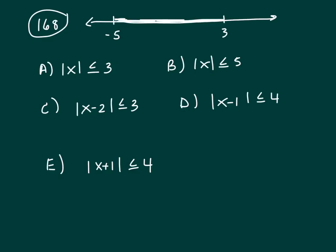In this problem, we're trying to figure out which one of the absolute value inequalities represents the number line. So it would be all the numbers x between negative 5 and 3.